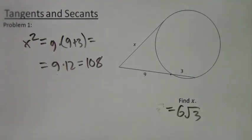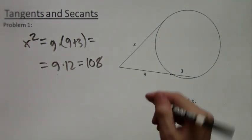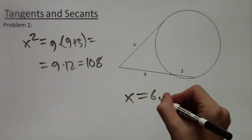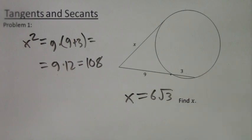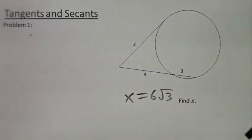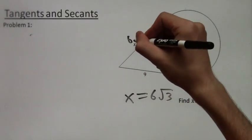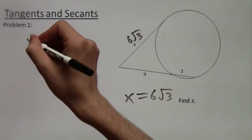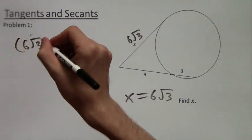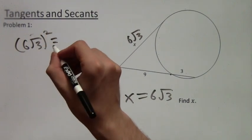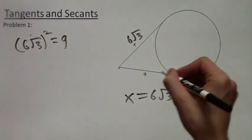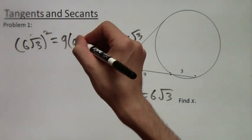And now of course, we would like to check and make sure that 6 root 3 works. So we're just going to do that. We replace x with 6 root 3. We plug it in. 6 root 3 squared equals 9 times, and then the whole length of the segment is 9 plus 3, which will be 12.